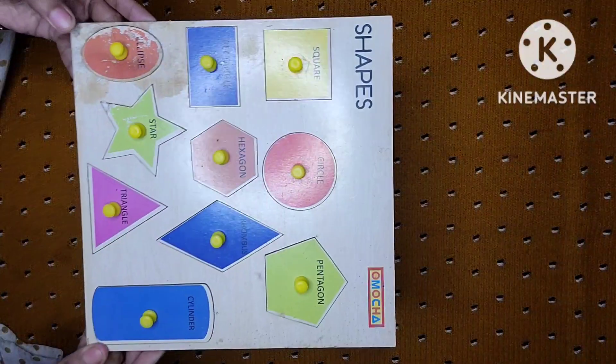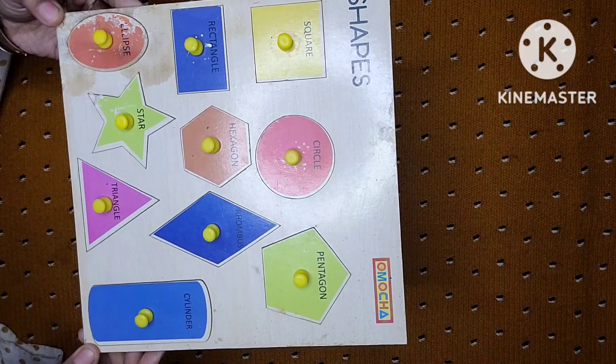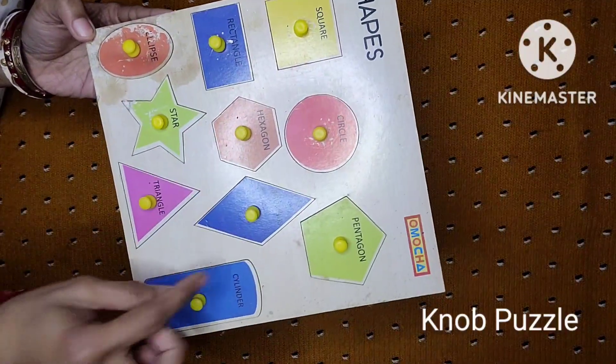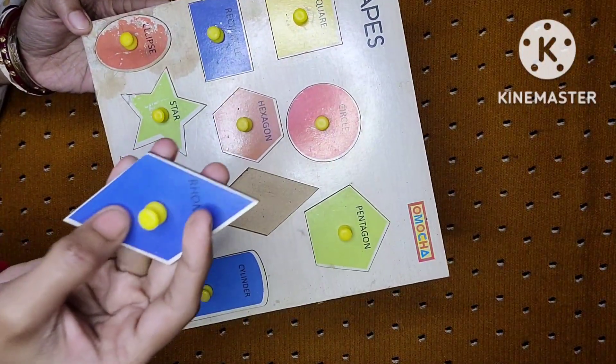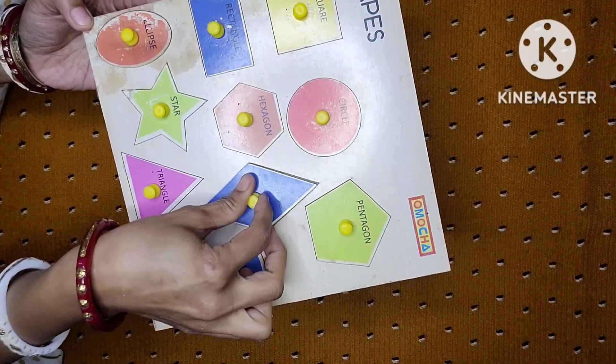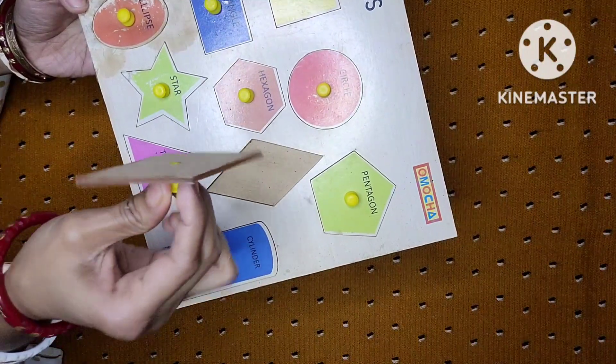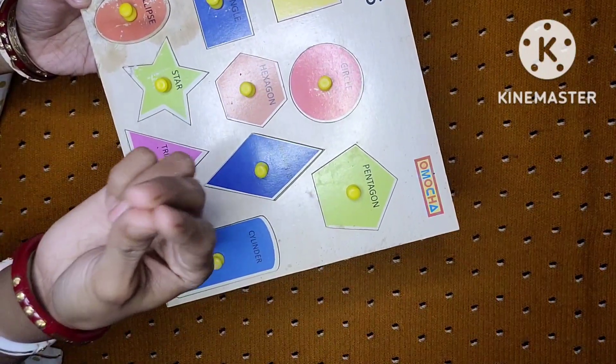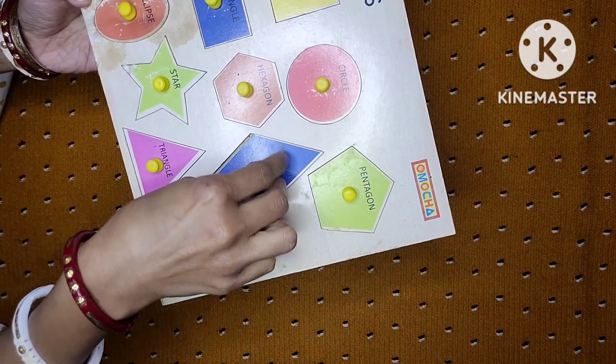Today we are going to learn about this playkit. It is a knob puzzle based on shapes. See here, because of these knobs these are called knob puzzles. We can hold it through these three fingers, we can take it out and place it back.